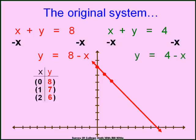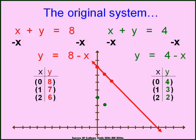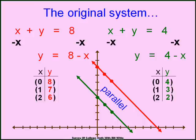Now let's graph the other equation and see where these two meet, because that is the solution to the system. Solving for y and putting in 0, 1, and 2: if I put in 0 I get 4, so graph (0, 4); put in 1, 4 minus 1 is 3, so graph (1, 3); put in 2, I get (2, 2). These two lines are parallel — there is no solution. Whenever we get all zeros in a coefficient matrix, there will be no solution. You don't have to go to the trouble of graphing.